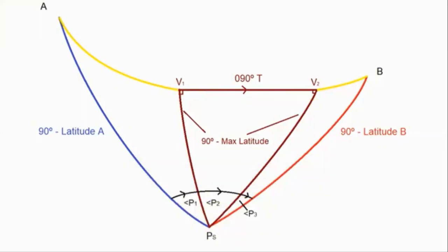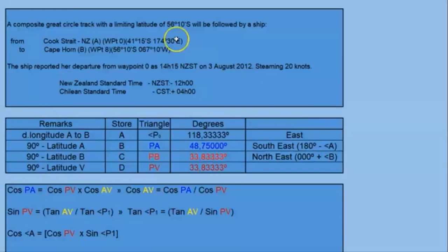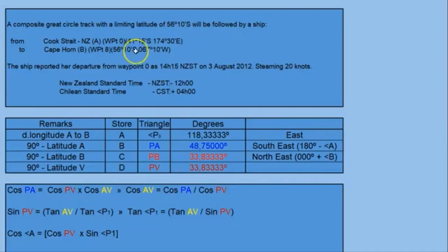Let's see today's example question. We have a composite great circle track with a limiting latitude of 56 degrees 10 minutes south, followed by a ship from Cook Strait. Point A position is 41 degrees 15 minutes south, 174 degrees 30 minutes east, and we are sailing eastwards to Cape Horn at 56 degrees 10 minutes south, 67 degrees 10 minutes west.